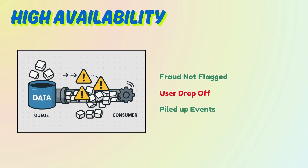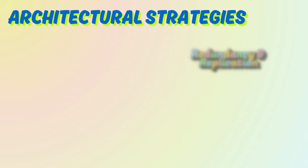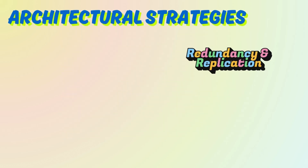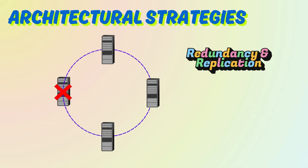Now let's break down how the pros actually design these pipelines. First: implement redundancy and replication — start with the basics, replicate everything. Kafka, Pulsar, and Kinesis all support partition and broker-level replication. If one broker dies, your data is still safe, and with write-ahead logs you get durability even before processing begins.